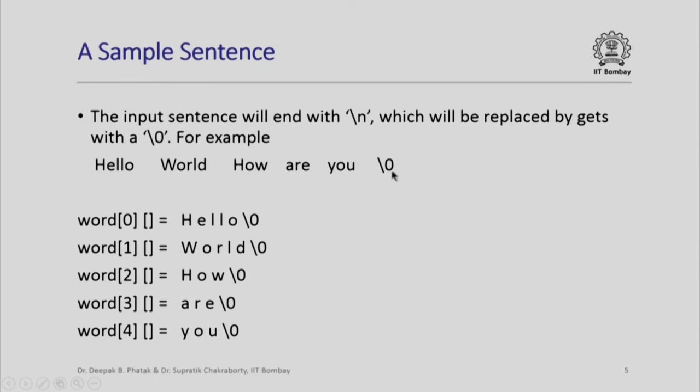This backslash 0 here will actually be inserted by our input operation. The input sentence will end with a backslash n, which is the new line character or when you press enter. But this will be replaced by our gets function with a backslash 0. So, therefore, hello world, how are you? A sentence with blanks all around in between and outside will look like this.